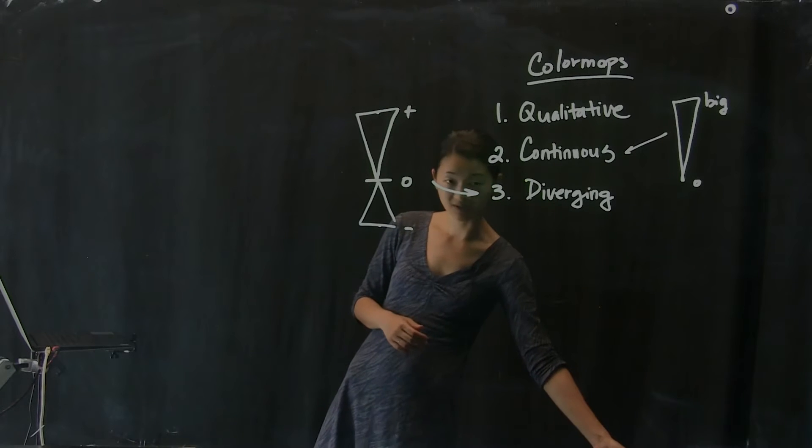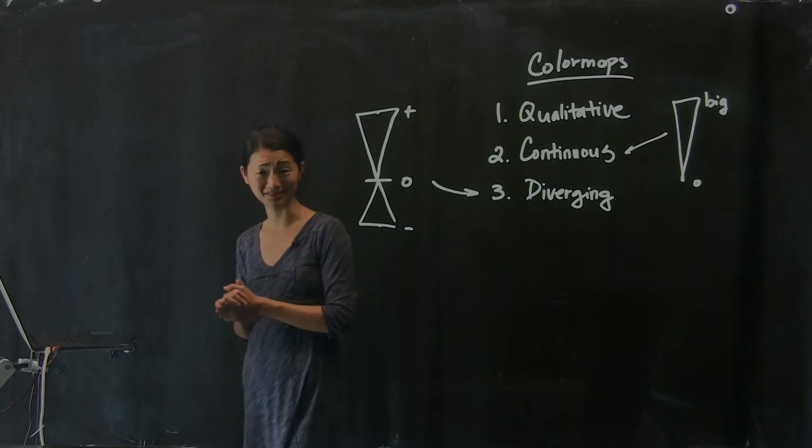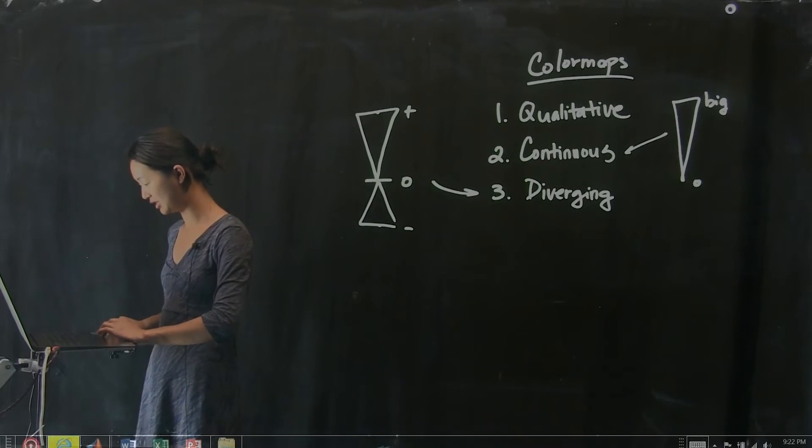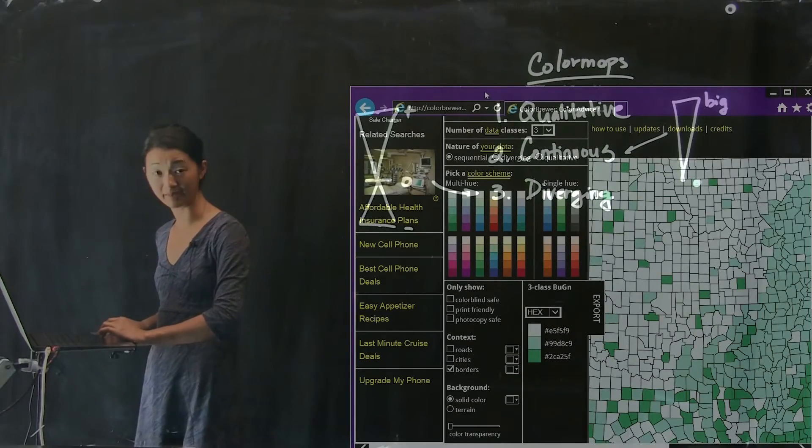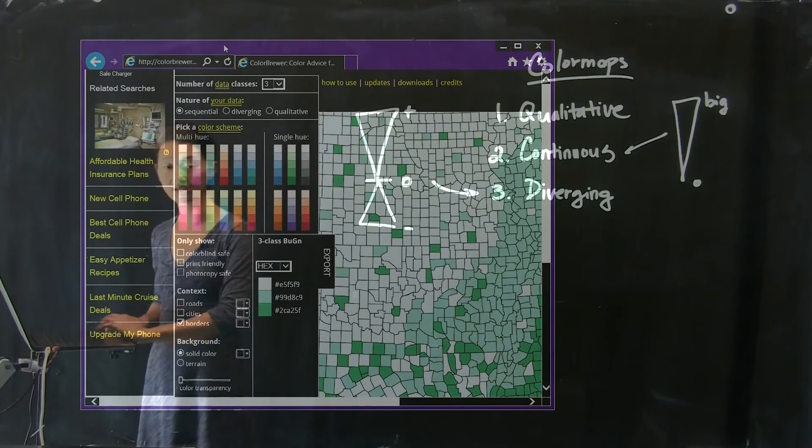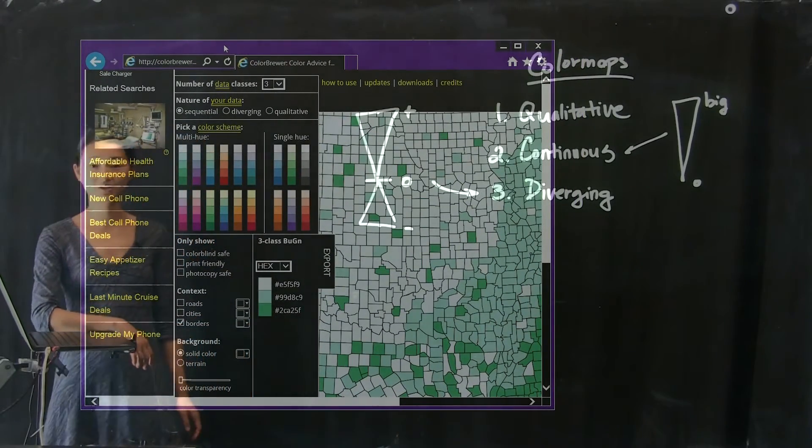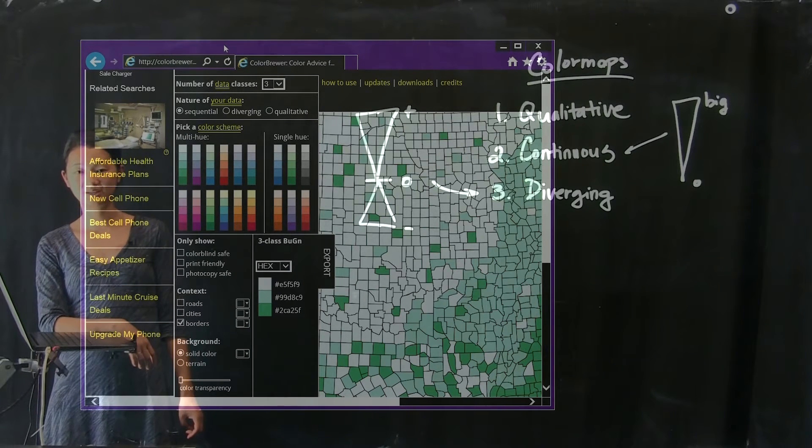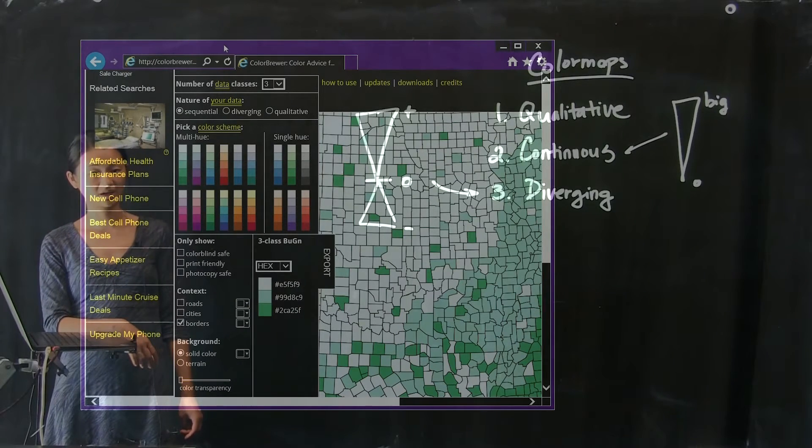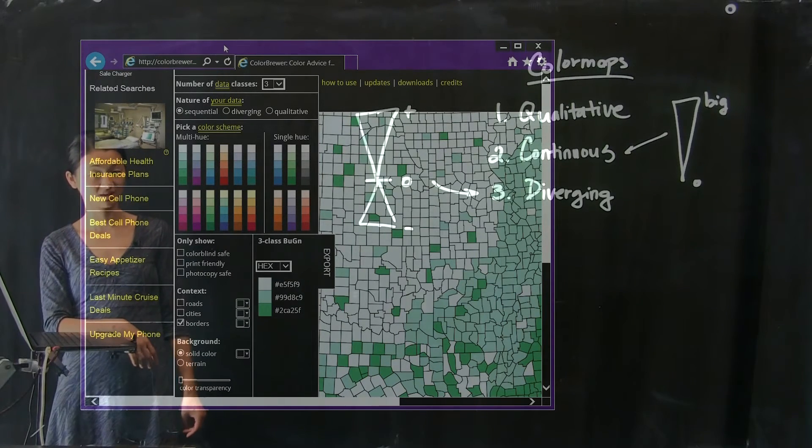What I'm going to show you is actually this really nifty tool that came out of the cartography community, but really it applies pretty generally to any kind of color map that you're trying to look at. It's called colorbrewer.org, and what it does is it gives you suggested color maps and shows you what they look like on top of a map of counties in the southeast.